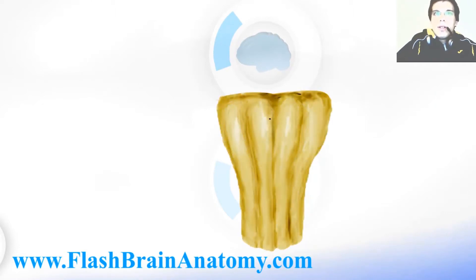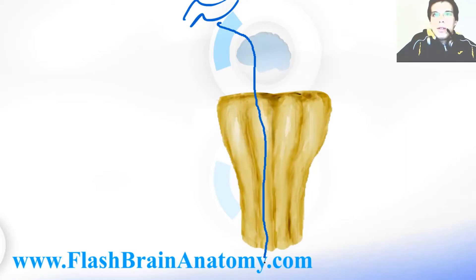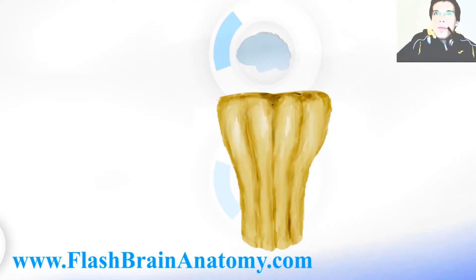Here it is. These two structures are the pyramids of the medulla oblongata. They are the elevations caused by the corticospinal tract — the tract that goes from the cortex of the brain through the pyramids and down to the spinal cord. Those two pyramids are separated by the median fissure in the middle.